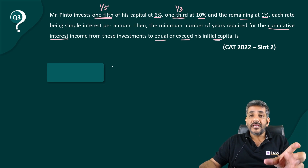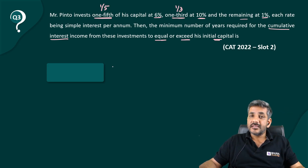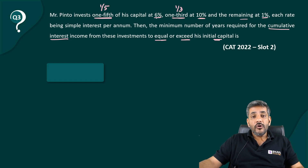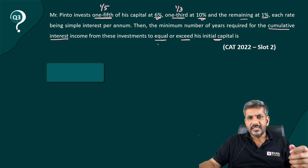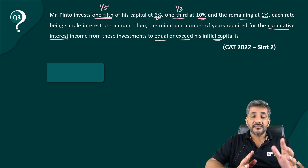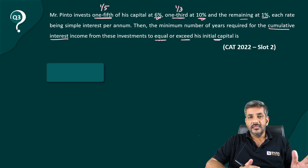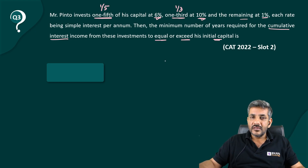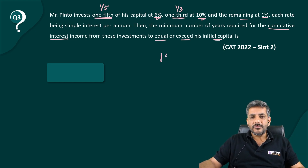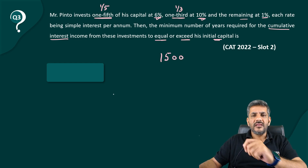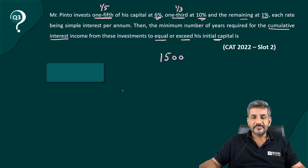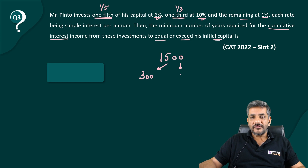So we take the initial investment as 15, but since we also deal with percentages, a multiple of 100 makes things easier. Therefore, assume the initial investment to be 1500. One-fifth of 1500 is 300, one-third is 500, and the remaining is 1500 − 300 − 500 = 700.